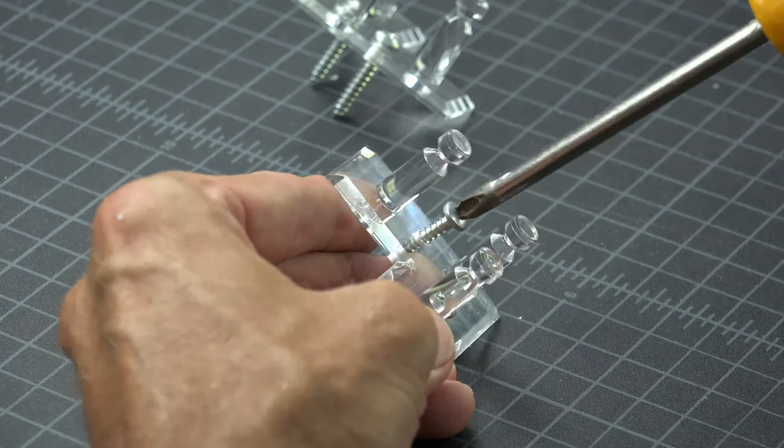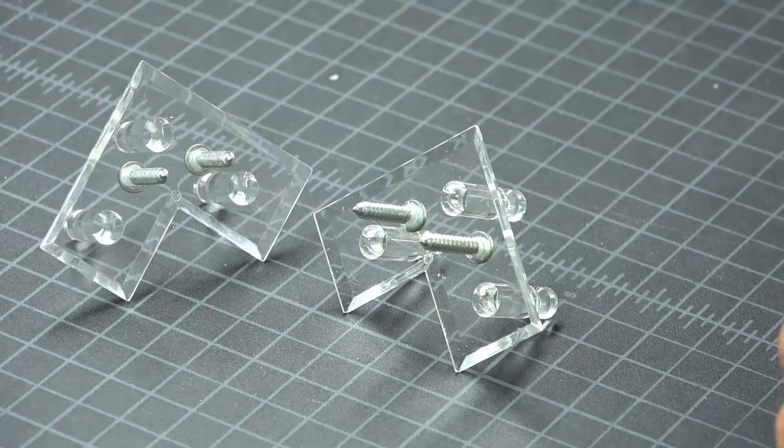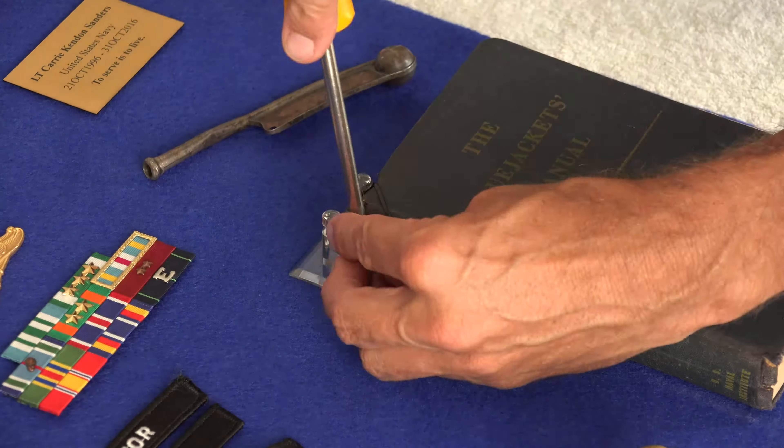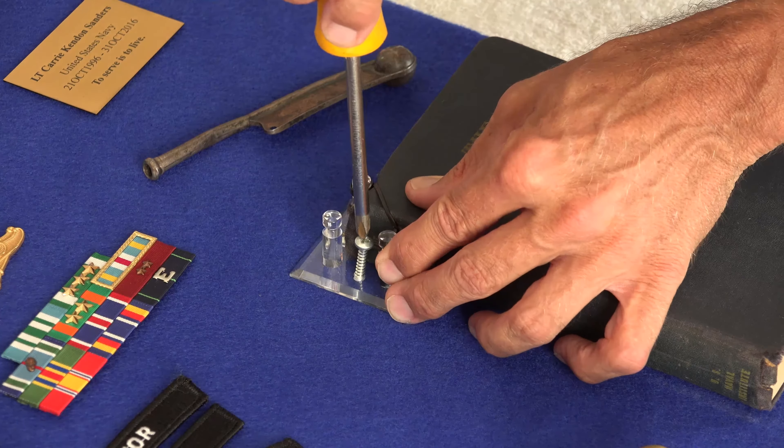Before you attach your brackets to the display, thread your screws through first. This will actually help thread the plastic for a tight grip on the screw. Then take your brackets to the board and mount.